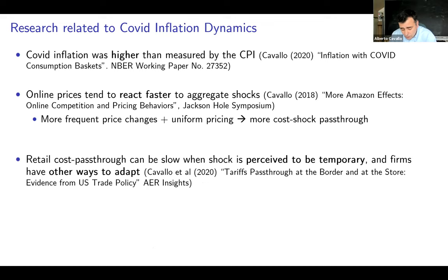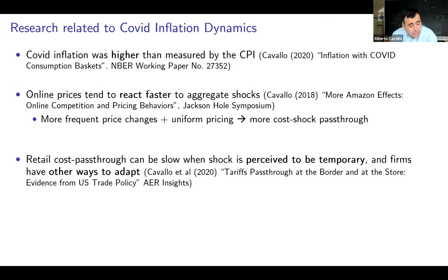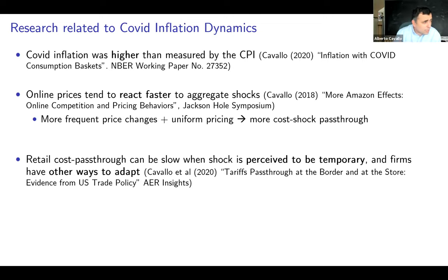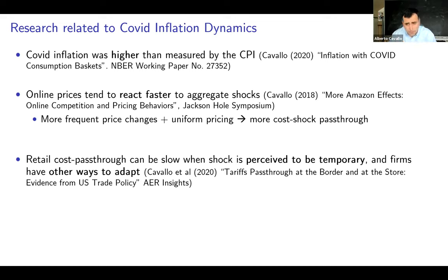There are also some reasons to be more optimistic. We wrote a paper on the trade war trying to see how quickly the pass-through of additional tariffs worked. What we found is that at the retail level, the pass-through was actually quite slow as long as the retailers felt the shock was going to be temporary, or found other ways to adapt. COVID is certainly something many companies may have felt at the beginning to be a temporary shock, which prevented some initial pass-through. Unfortunately, COVID is not the type of crisis where you can easily find other ways to adapt, so that would be more problematic.